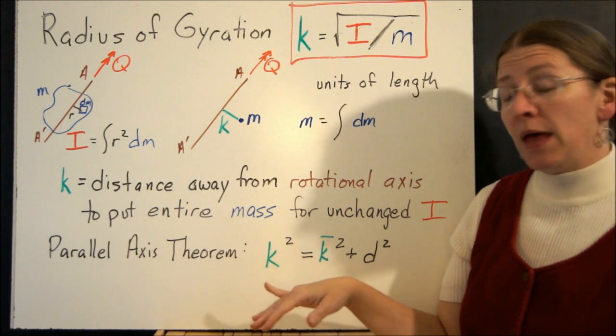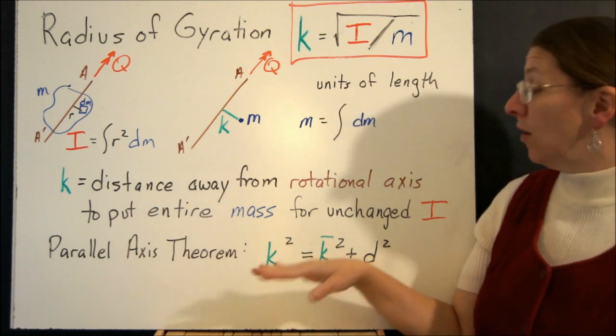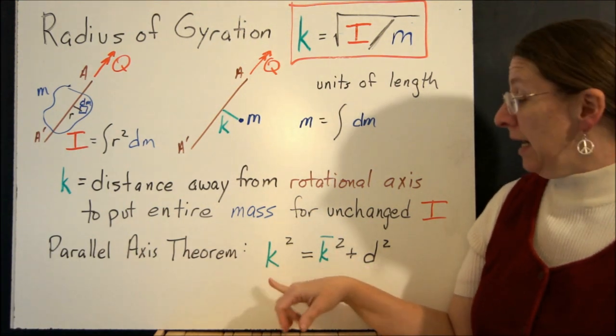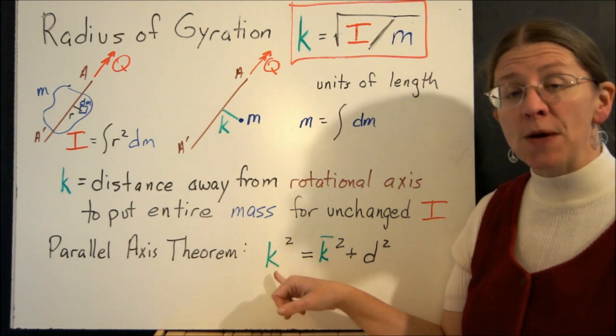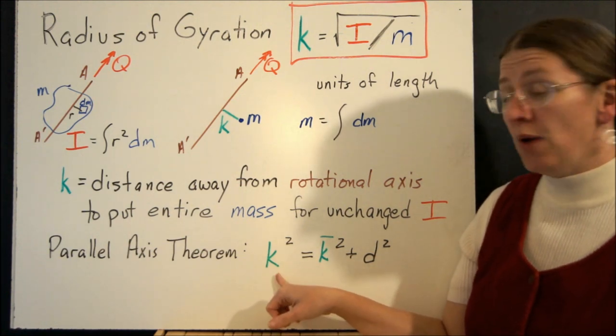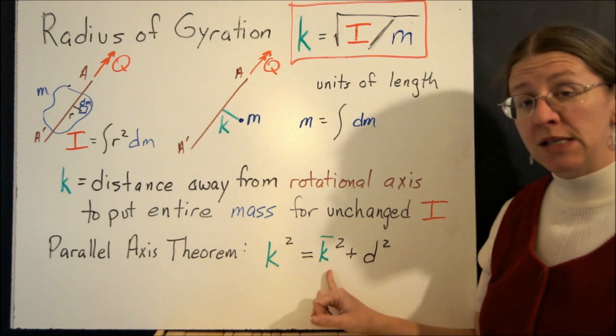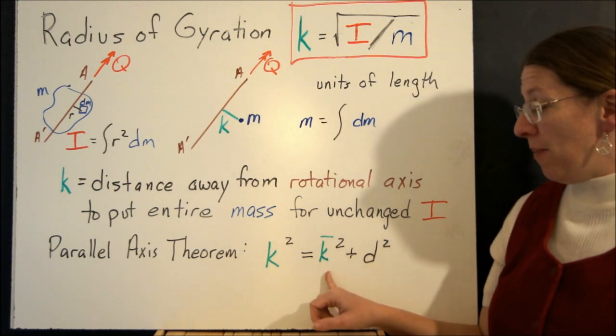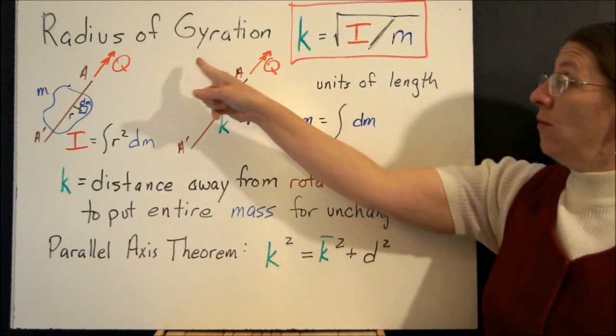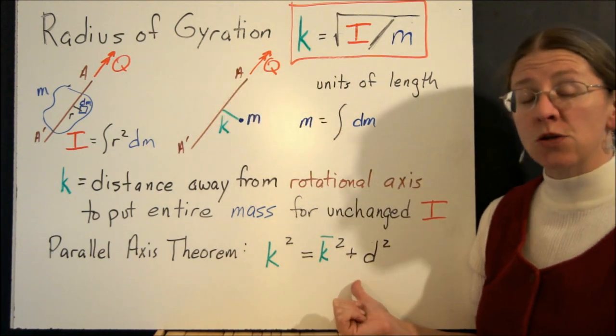The parallel axis theorem then, if you take what we just had a minute ago in terms of your k's, is the k for your new axis, the radius of gyration for your mass about its new axis, is related to the k for the centroid by k² equals k-bar², where this is the centroidal radius of gyration, plus d².